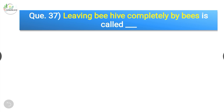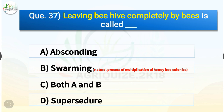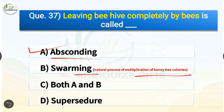Question number thirty-seven: leaving the beehive completely by bees is called — options are absconding, swarming, both A and B, or supersedure. The correct answer is option A, absconding. Swarming is the natural process of multiplication of honeybee colonies, and supersedure is the natural replacement of an established queen in the same hive.